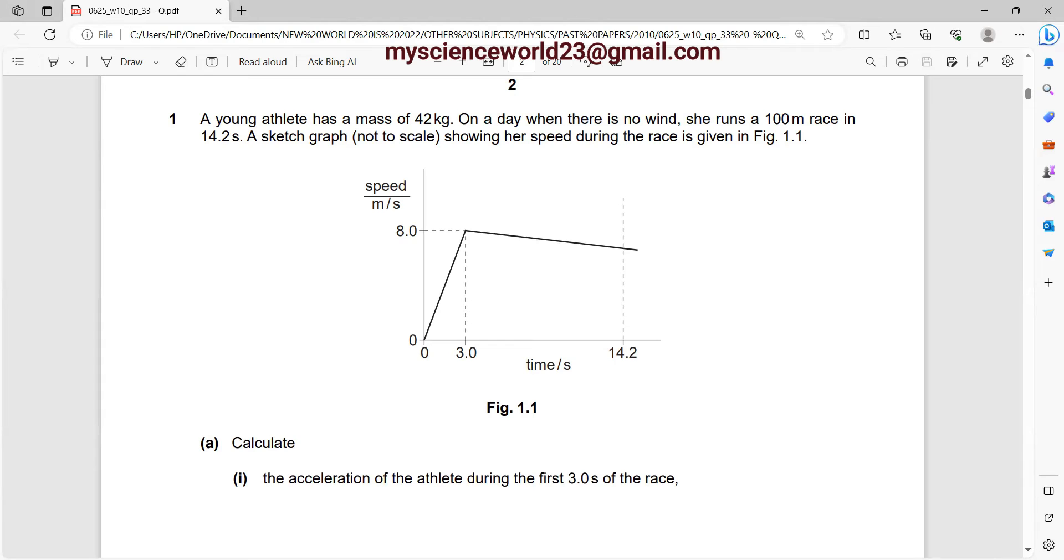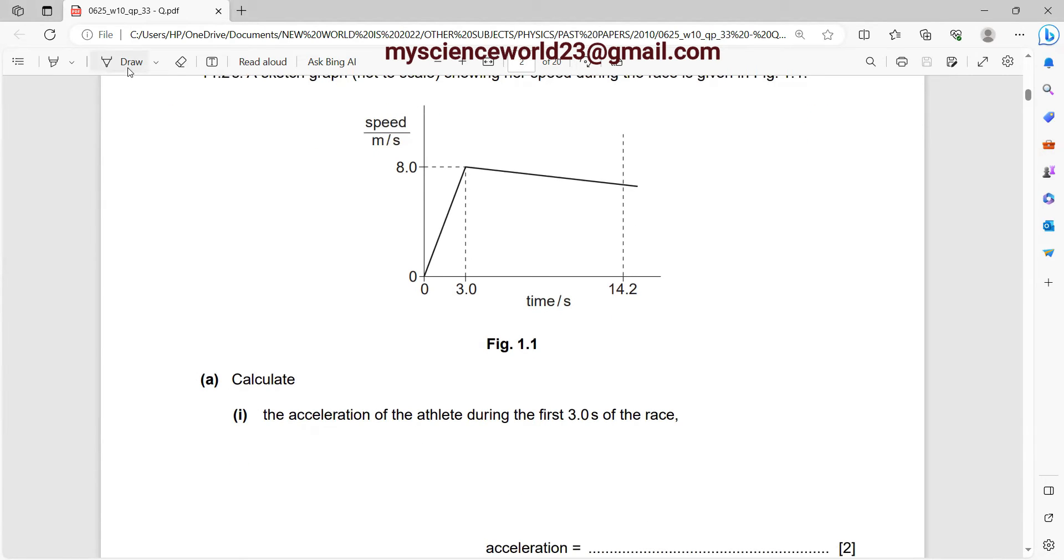Part A asks calculate the acceleration of the athlete during the first three seconds of the race. So acceleration, as we all know, is equals to the change in velocity divided by time. That is your final velocity minus the initial velocity divided by time. So the final velocity there is 8 minus 0 divided by 3, and that gives you, using your calculator, 2.7 meters per second squared.